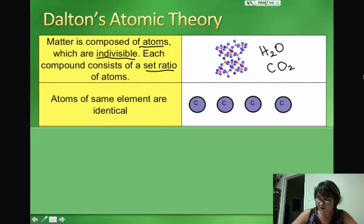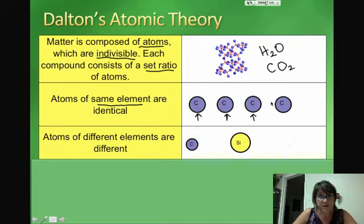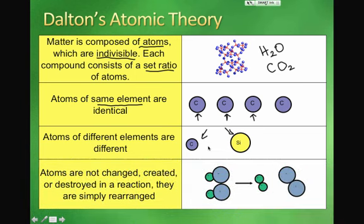John Dalton also said that atoms of the same element will be identical. So every time you find the smallest bit of carbon that you can have, it's going to look exactly the same as the other carbons that we find. But if you had two different elements, then their atoms, their tiniest bits, they would be different because they're not the same element. So far, so good, right?